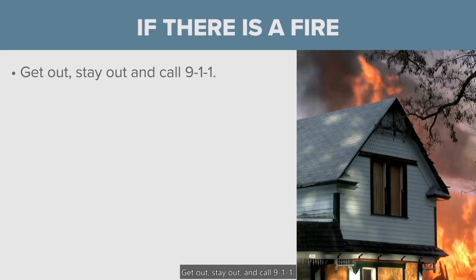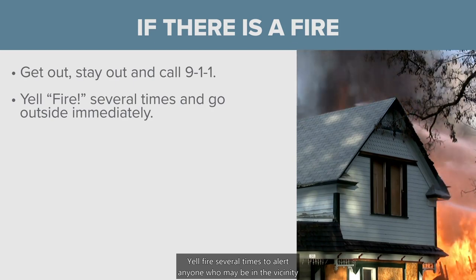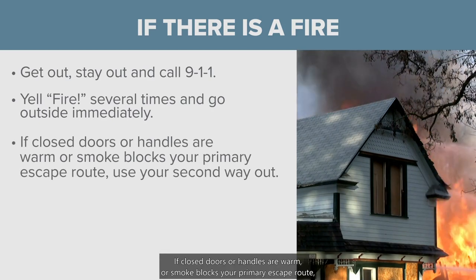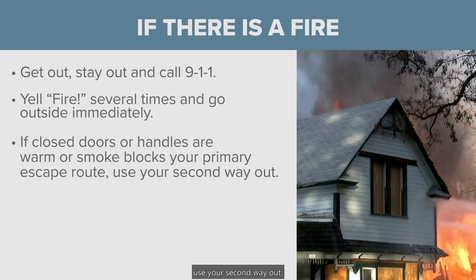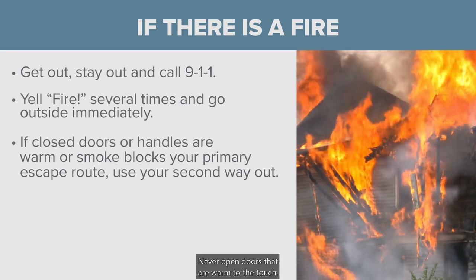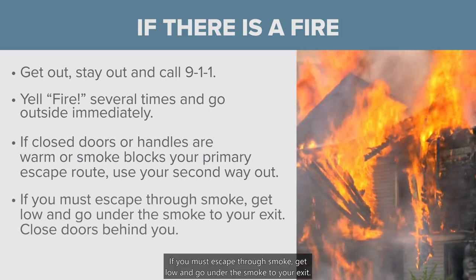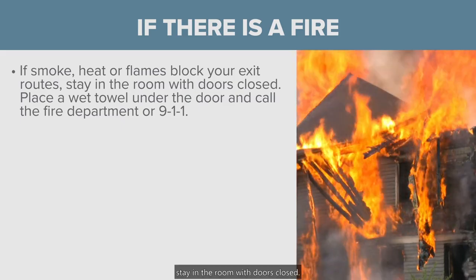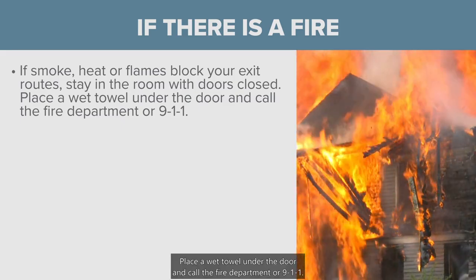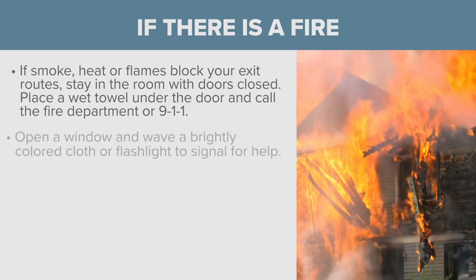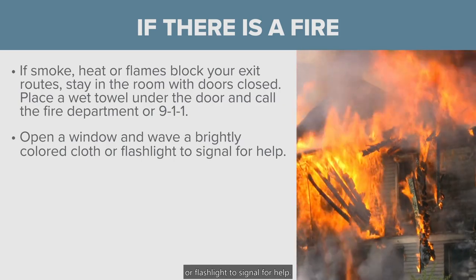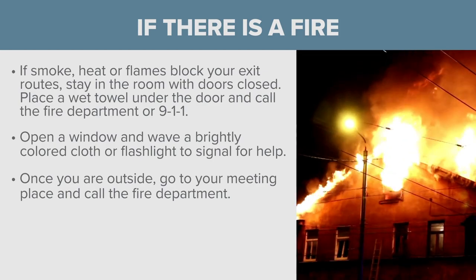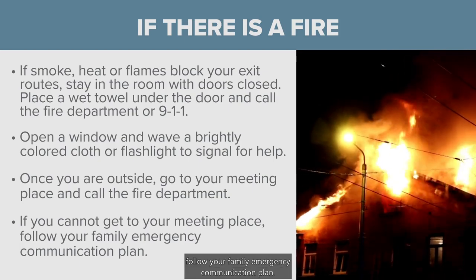If you experience a fire, the first rule is: get out, stay out, and call 911. Yell 'fire' several times to alert anyone nearby and go outside immediately. If closed doors or handles are warm or smoke blocks your primary escape route, use your second way out — never open doors that are warm to the touch. If you must escape through smoke, get low and go under the smoke to your exit. Be sure to close doors behind you. If smoke, heat, or flames block your exit routes, stay in the room with doors closed, place a wet towel under the door, and call 911. Open a window and wave a brightly colored cloth or flashlight to signal for help. Once outside, go to your meeting place and send one person to call the fire department.